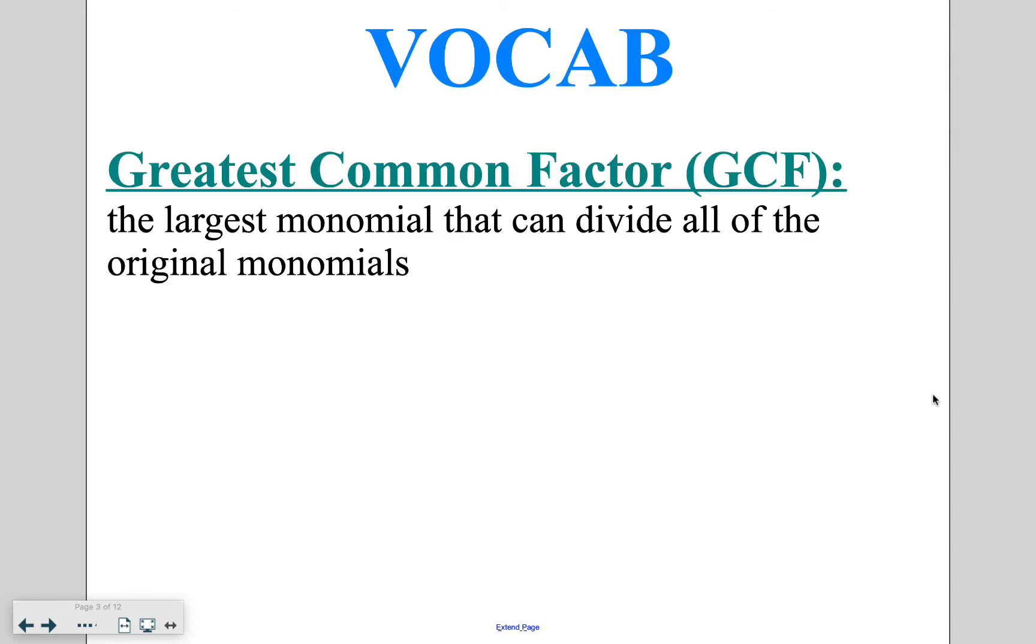A greatest common factor is the largest monomial that can divide all of the original monomials. This is very similar to a greatest common factor of just a number, but now it's going to include variables into the process.